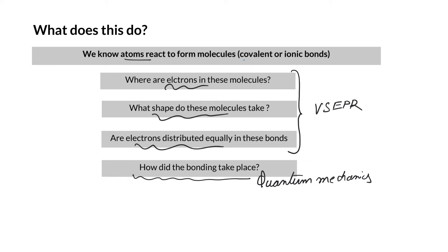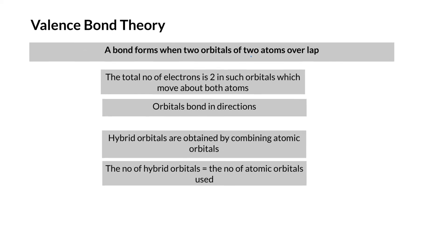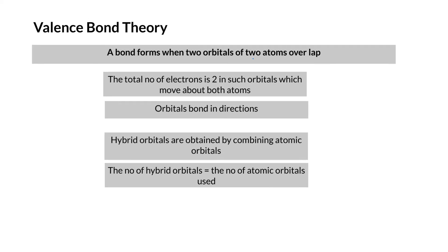Toward that end, we use the valence bond theory. What does valence bond theory say? It says that a bond is formed when two orbitals of two atoms overlap. Let's say an atom 1s, which is spherical—1s¹, I'm talking about hydrogen.